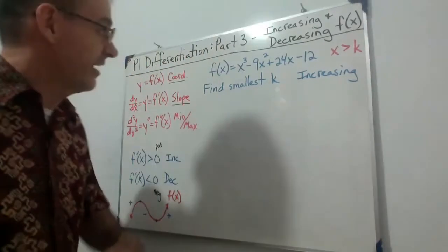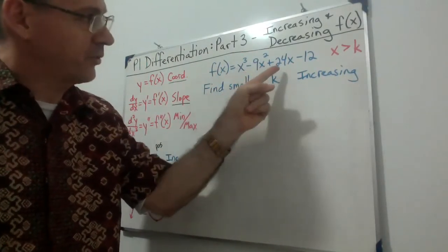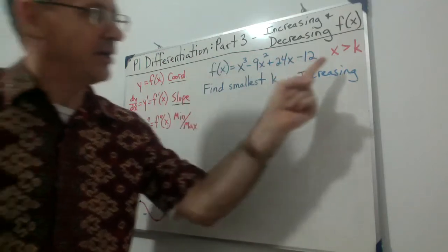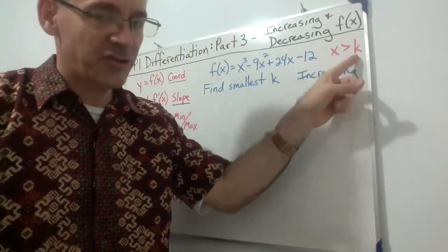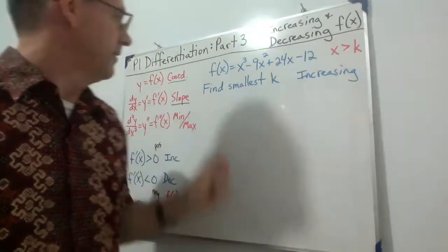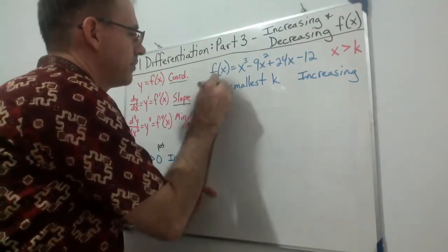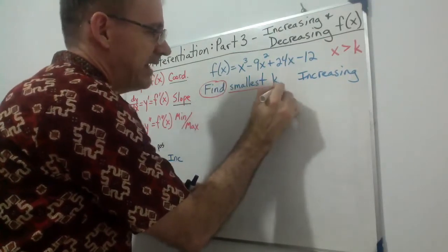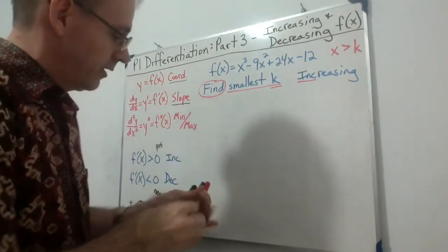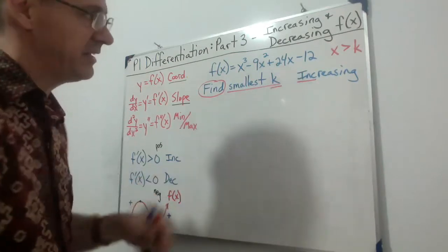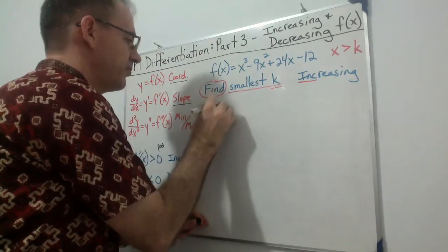Here's our function: f(x) = x³ − 9x² + 24x − 12. The domain statement is x > k, and we want to find the smallest k. This is an increasing function.